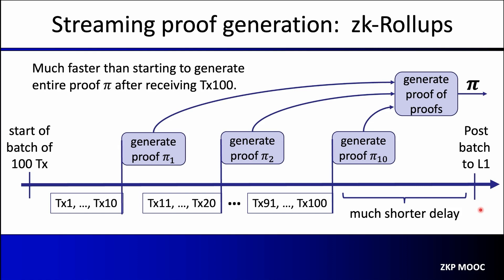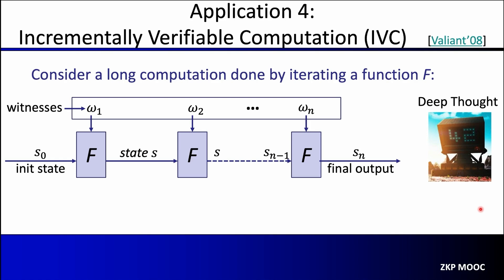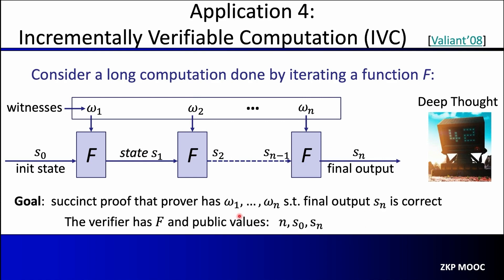The next application is called incrementally verifiable computation, or IVC. The setup is that we have a very long computation done by iterating some fixed function f. The computation starts at some initial state S0; a first input omega_1 comes in, we apply f and get state S1; another input comes in, we get S2; and so on until we reach the final state S_n. Our goal is to produce a succinct proof that the prover knows witnesses omega_1 to omega_n such that the final output S_n is correct.